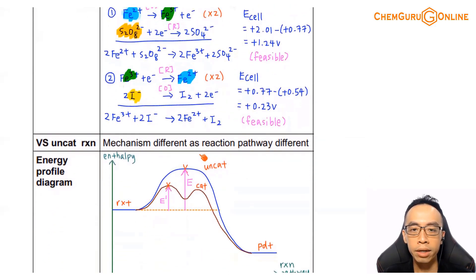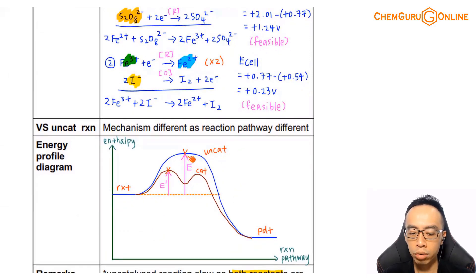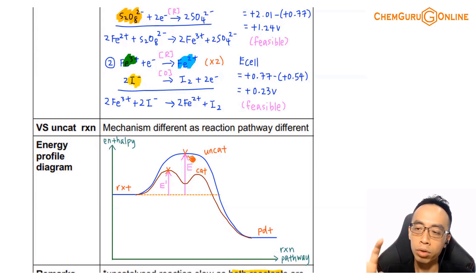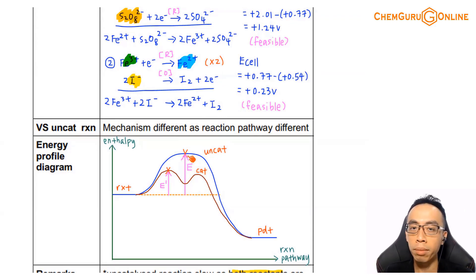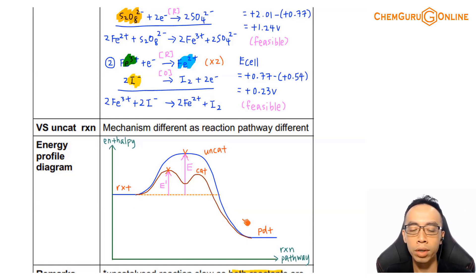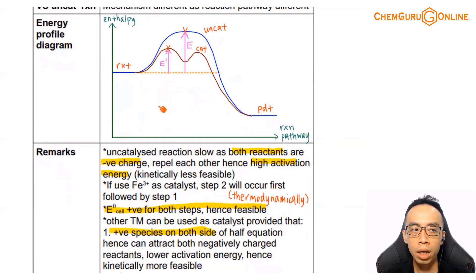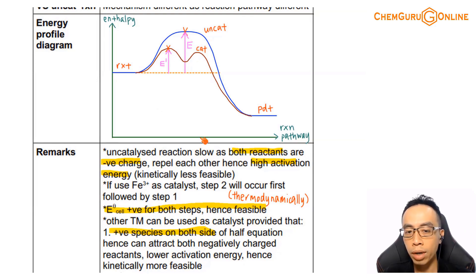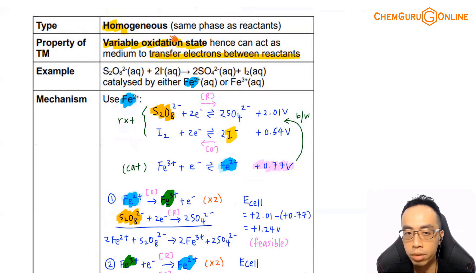Compared to the uncatalyzed reaction, the transition metal changes the mechanism. The catalyst comes in and acts as a middleman — if the reactants don't interact well, it accepts the electron from one and passes it to the other. Of course, if there is a middleman, the total number of steps increases, but each step is faster and the activation energy is lowered. Assuming the uncatalyzed reaction is one step with a higher activation energy, the catalyzed reaction now has two steps with significantly lower activation energy for each.